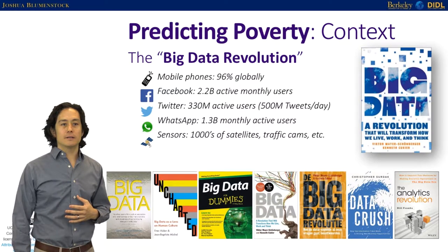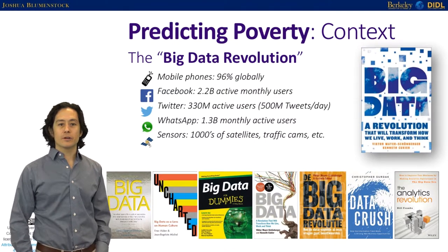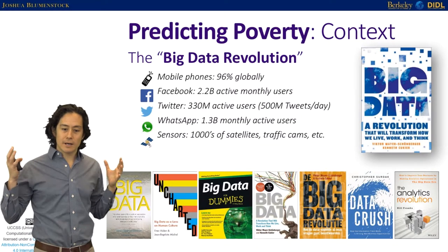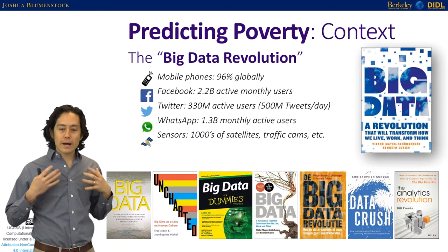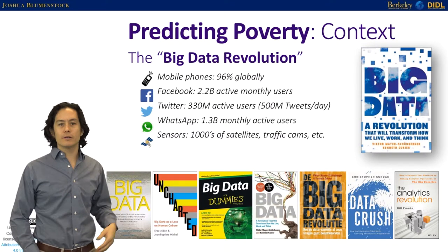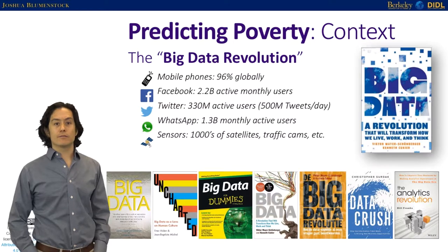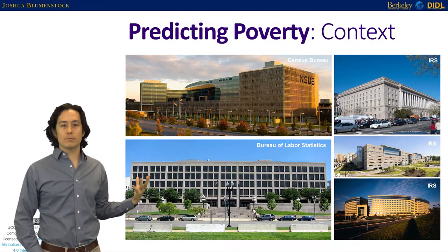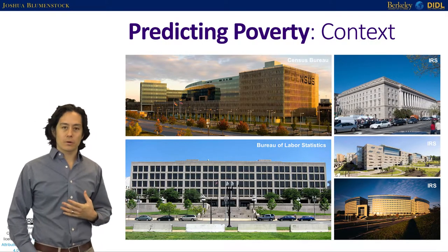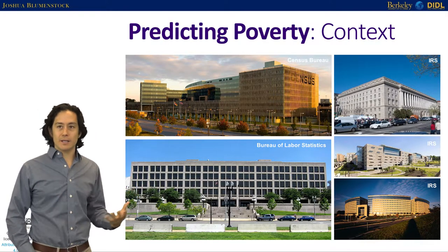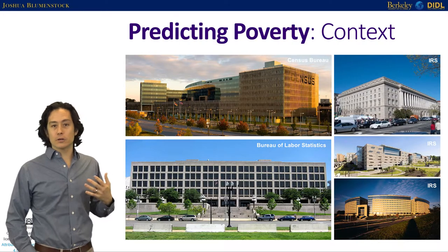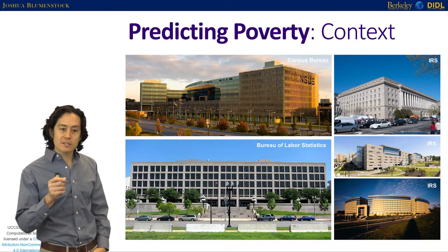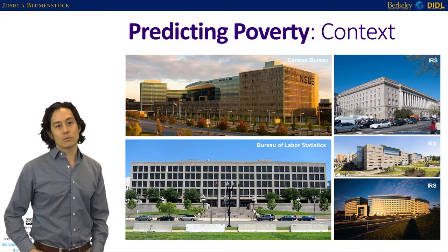It's also important to keep in context the big data that has existed around us for decades — centralized, structured big data with lots of big money behind it from the U.S. government, from firms, and from other sources. For example, the Bureau of Labor Statistics collects quarterly earnings reports, the IRS collects annual data, and the Census Bureau spends tens of billions of dollars every decade collecting data from every single person in the United States.